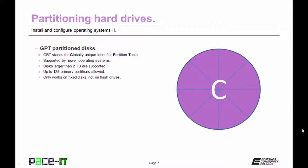Those were MBR, Master Boot Record hard drives. They came out with a newer system called GPT, Globally Unique Identifier Partition Tables. This is supported by many newer operating systems and allows for disks larger than two terabytes. It can hold up to 128 primary partitions, but it only works on fixed disks — regular hard drives. It does not work on USB or flash drives.